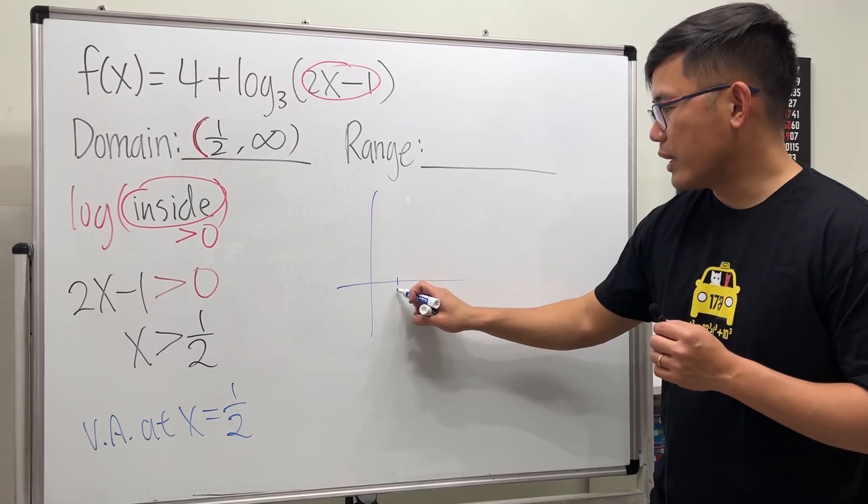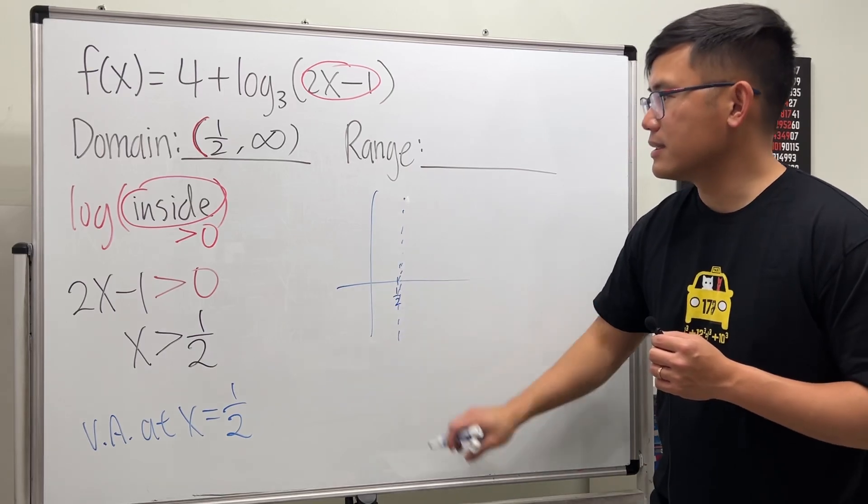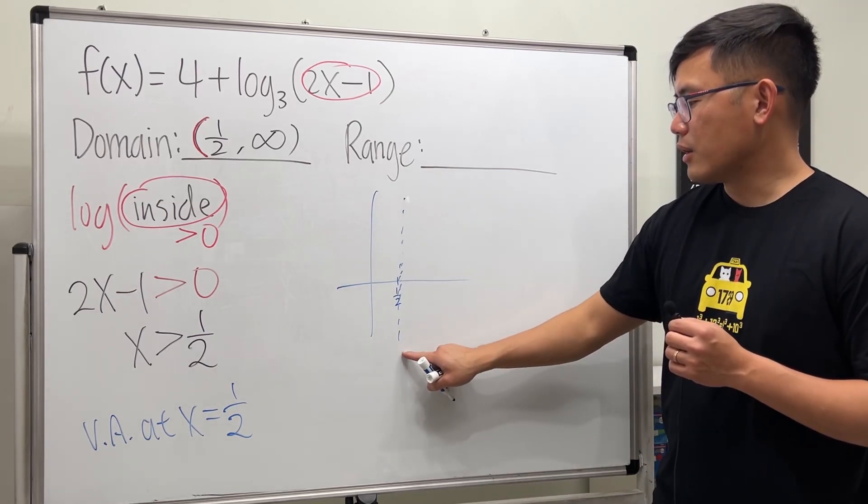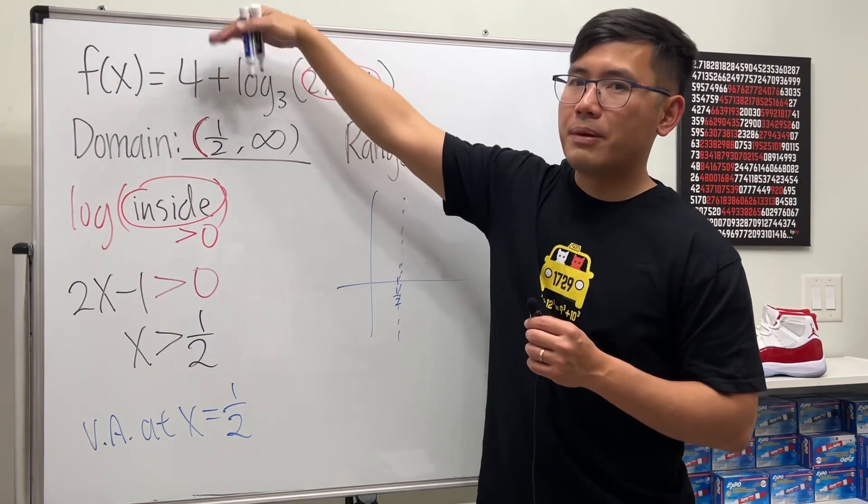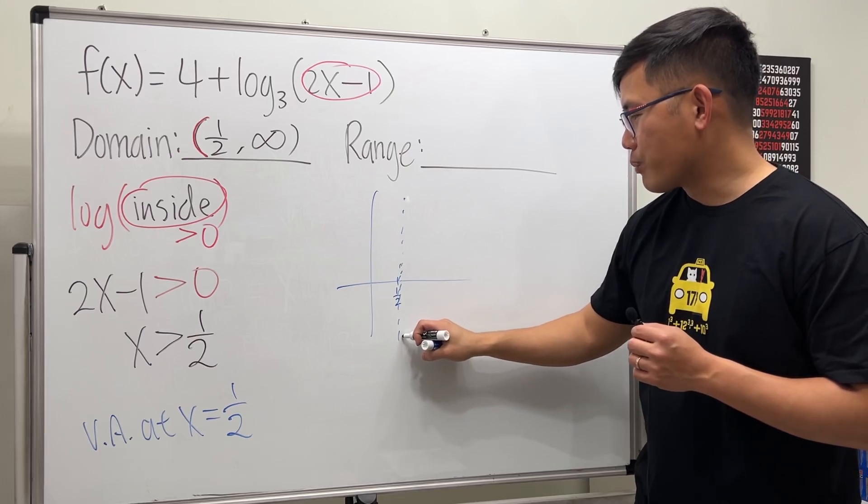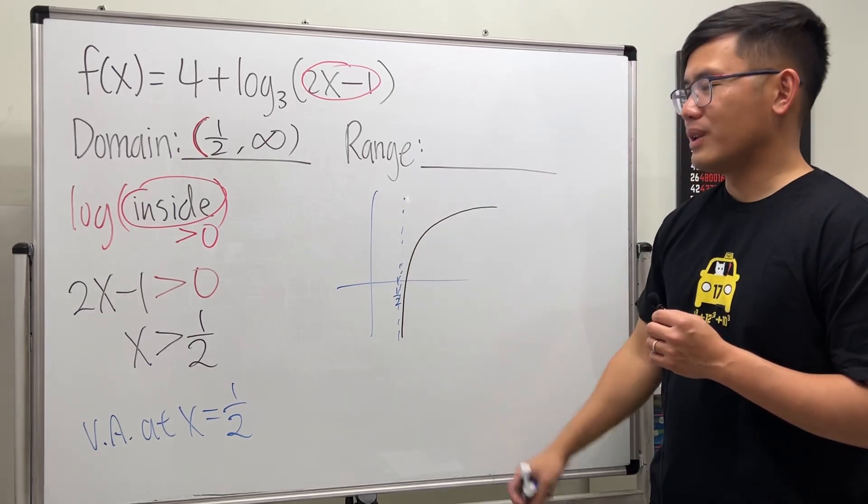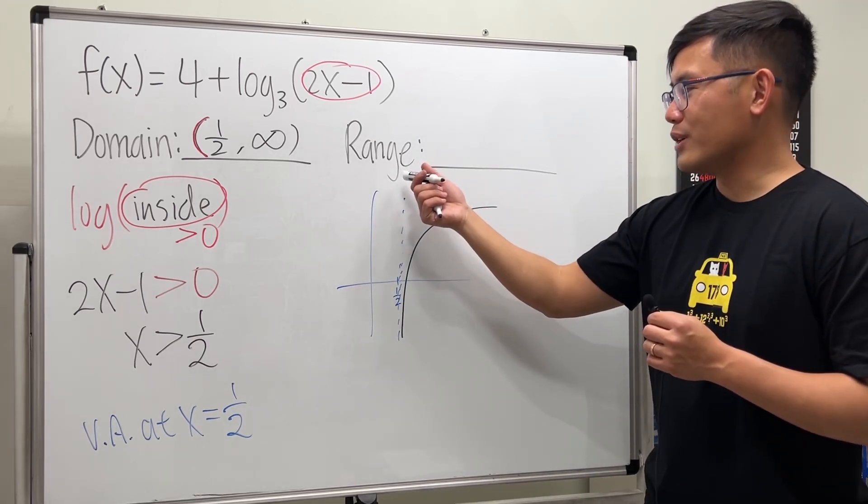You can actually do a quick sketch. Let's say one half is right here. What's going to happen is like this. Usually you have a log function that looks like this, but you shift up four units so it's just a little bit taller, so the graph will probably look something like this.